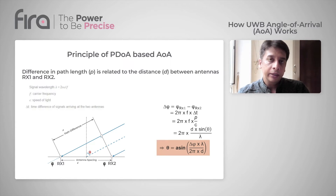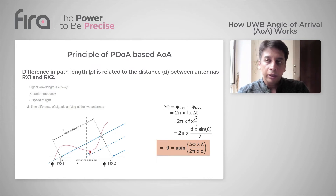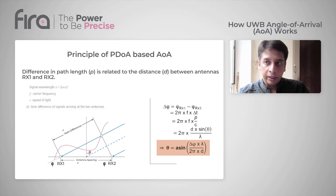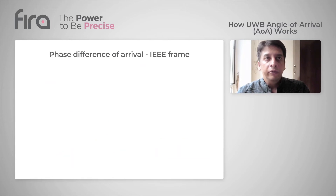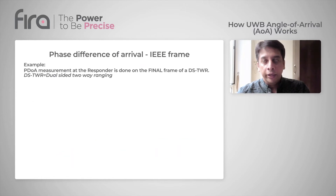Delta t is the time difference between the signal arriving at the two antennas. If you take this equation and transpose it, you finally arrive at a method to calculate theta, which is the angle of arrival from that particular anchor.